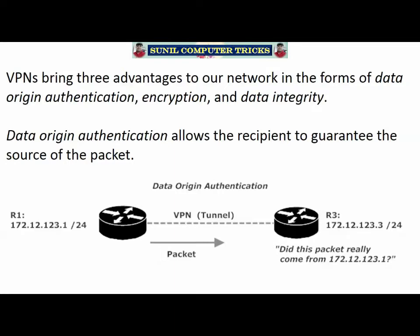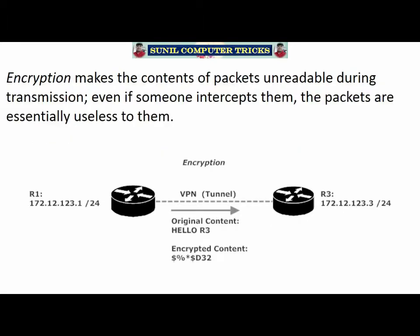Three more great features of VPNs are data origin authentication, encryption, and data integrity. Data origin authentication is done on the recipient end and allows the recipient to guarantee the source of the packet. Because all kinds of nasty things can happen along the VPN — a man-in-the-middle attack, for example — Router 3 has to be able to say: did this packet really come from the source IP address indicated on the incoming packet?